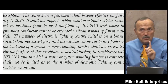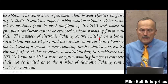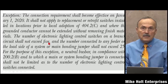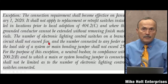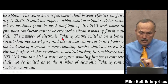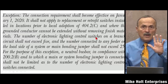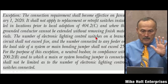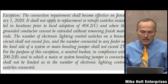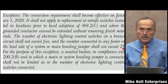However, there are limitations: the number of electronic lighting control switches on a single branch circuit shall not exceed five, and the number connected to any feeder on the load side of the system bonding jumper shall not exceed 25.